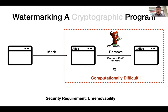The main security requirement is unremovability, which requires that it will be computationally difficult for an adversary to remove or modify the embedded message in a watermarked circuit without changing the circuit too much.